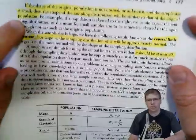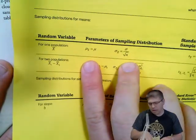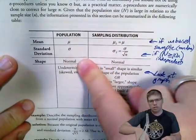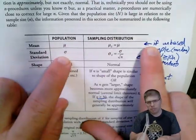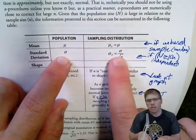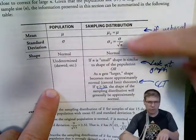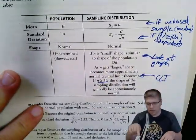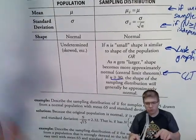When checking conditions for inference, we look at the graph of our sample data and assess whether the population seems reasonably symmetric with no outliers. I've summarized this in a table: population distribution with mean and standard deviation; if the shape is normal, the sampling distribution is normal; if not, Central Limit Theorem applies with a large sample size. The 'random' condition ensures unbiasedness, and the independence condition requires the population to be at least 10 times the sample size.